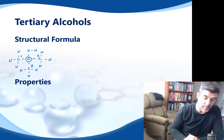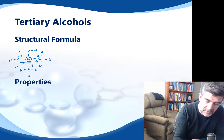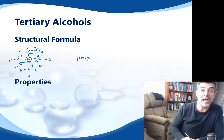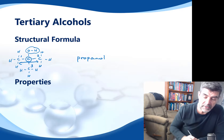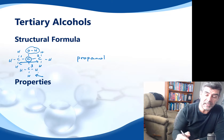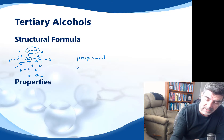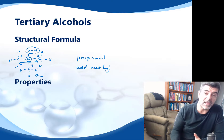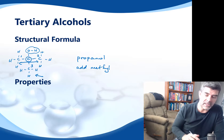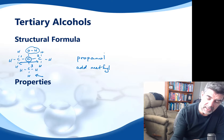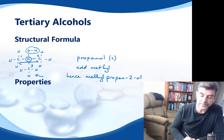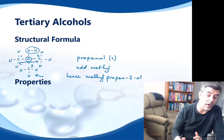The numbering system doesn't directly help us name this compound. When we look at the longest chain, it has three carbons — so therefore it's prop — and the OH group gives us propanol. We also have a methyl group coming off the main chain, so we have to add methyl to our name. The OH group can be located, and in this case it's on carbon two. So the name of this compound would be 2-methylpropan-2-ol. You should be able to draw that structure, and this is the structure of a tertiary alcohol.